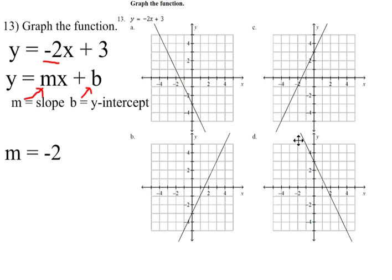It goes down from left to right. So just take a look at c. C is going up from left to right, so that's a positive slope. So c can't be your answer for this question. That can't be the graph of this line.